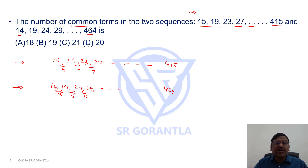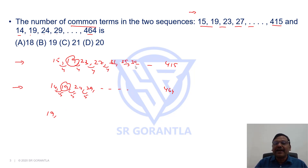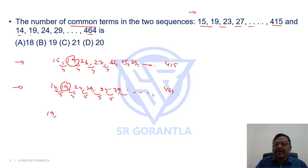The first common term for these two series is 19. What will be the next common term? Continuing the first series: 27, 31, 35, 39 (difference of 4). Continuing the second: 29, 34, 39 (difference of 5). The next common term for the two series is 39.